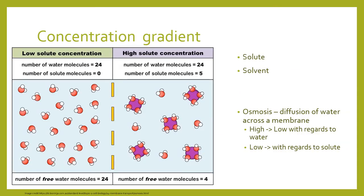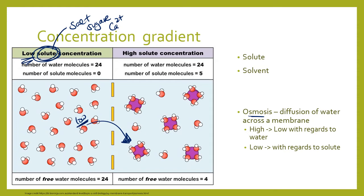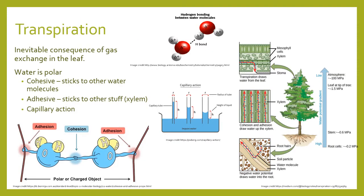A quick review of osmosis: osmosis is the movement of water across a membrane. Water moves from where there is a low concentration of solute particles to where there is a higher concentration of solute particles — like salt, sugar, or calcium ions — crossing that semi-permeable membrane from low solute to high solute concentration. All of this happens because water is polar.